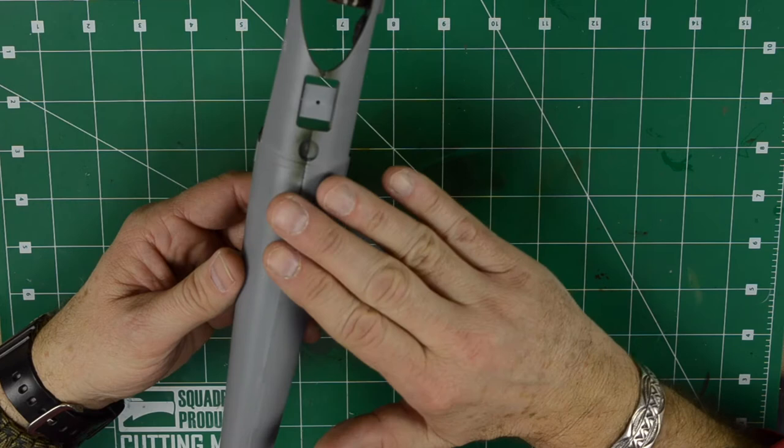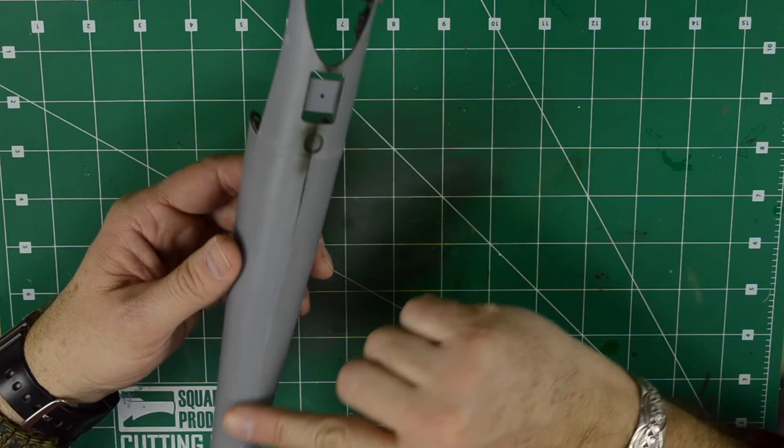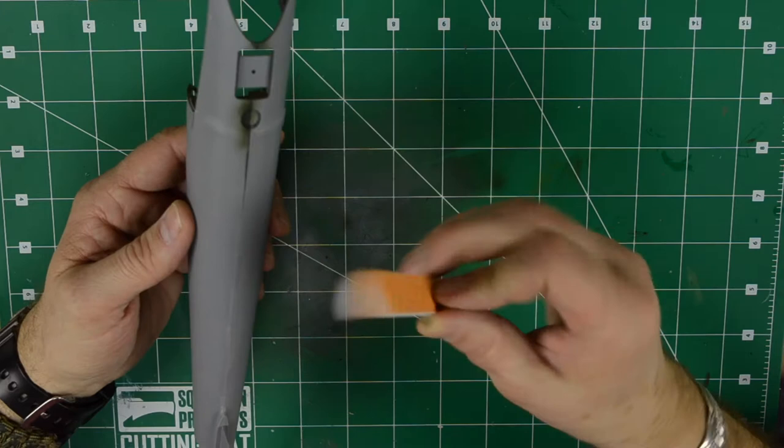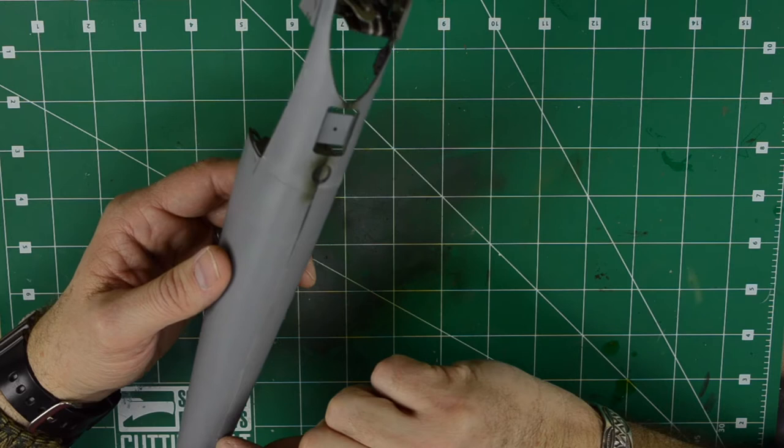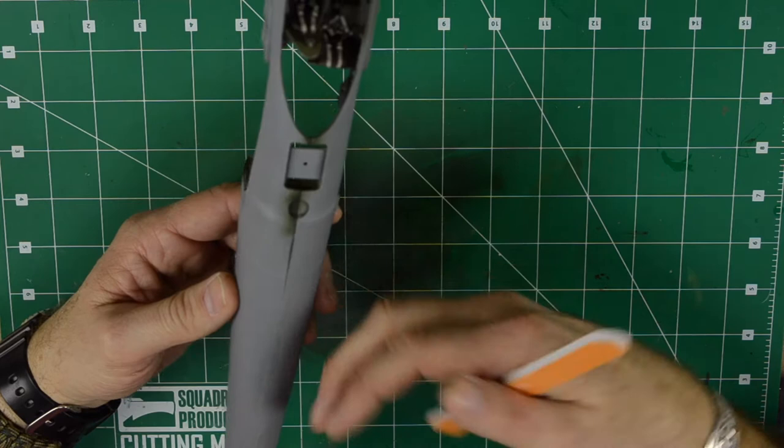After that's done, I'll go over it with the sanding stick. In this case, since it's already pretty smooth, I'll use a number two, a medium sanding stick, and then once that's done, I place a small bead of superglue along the seam line and let that dry.